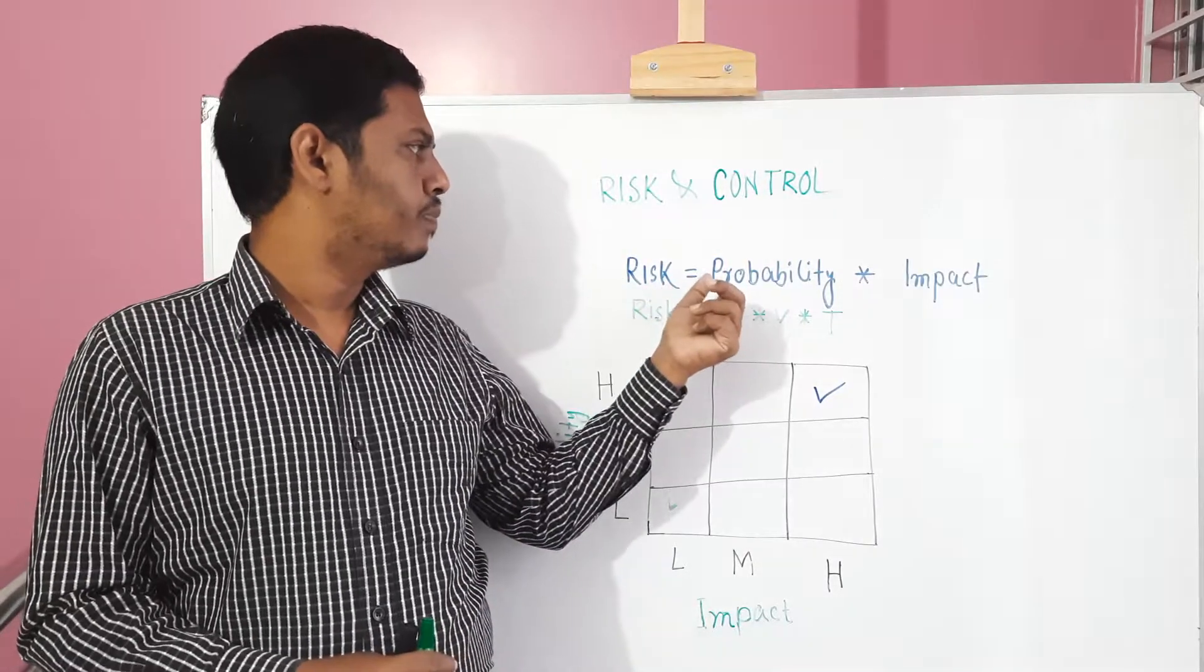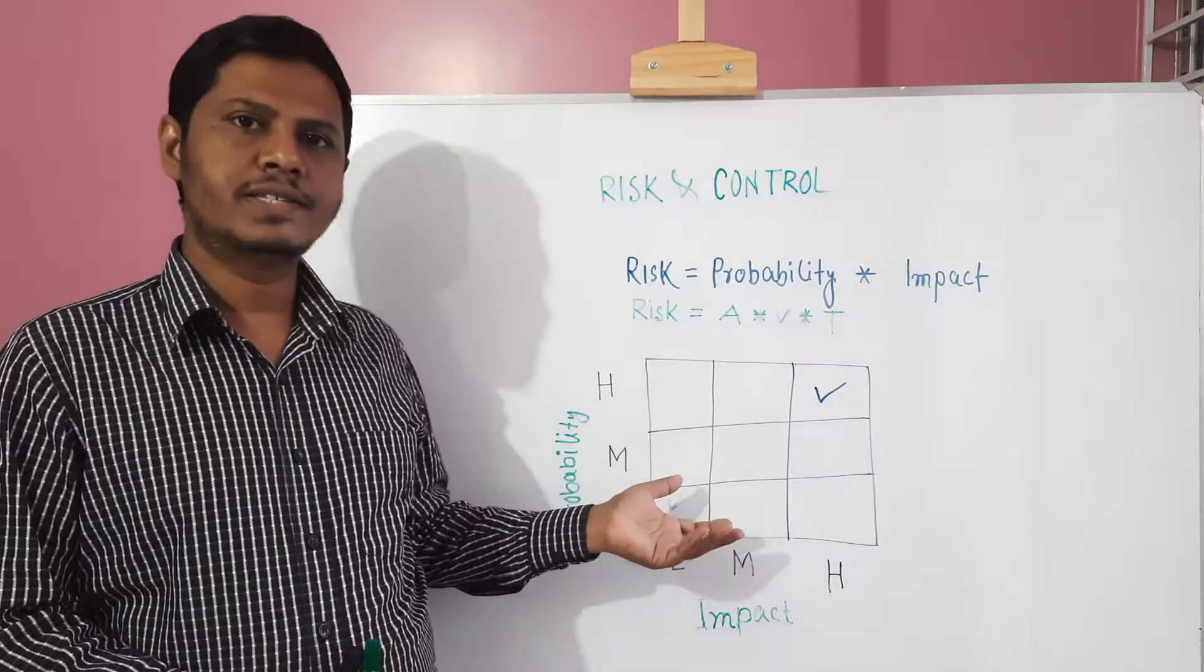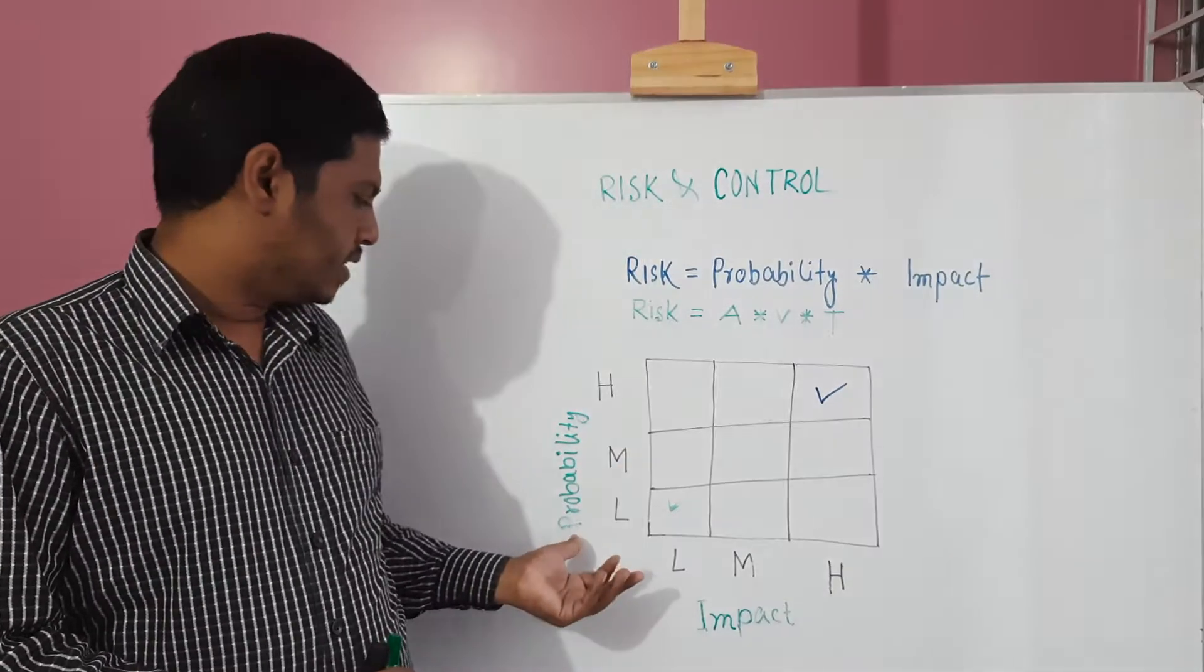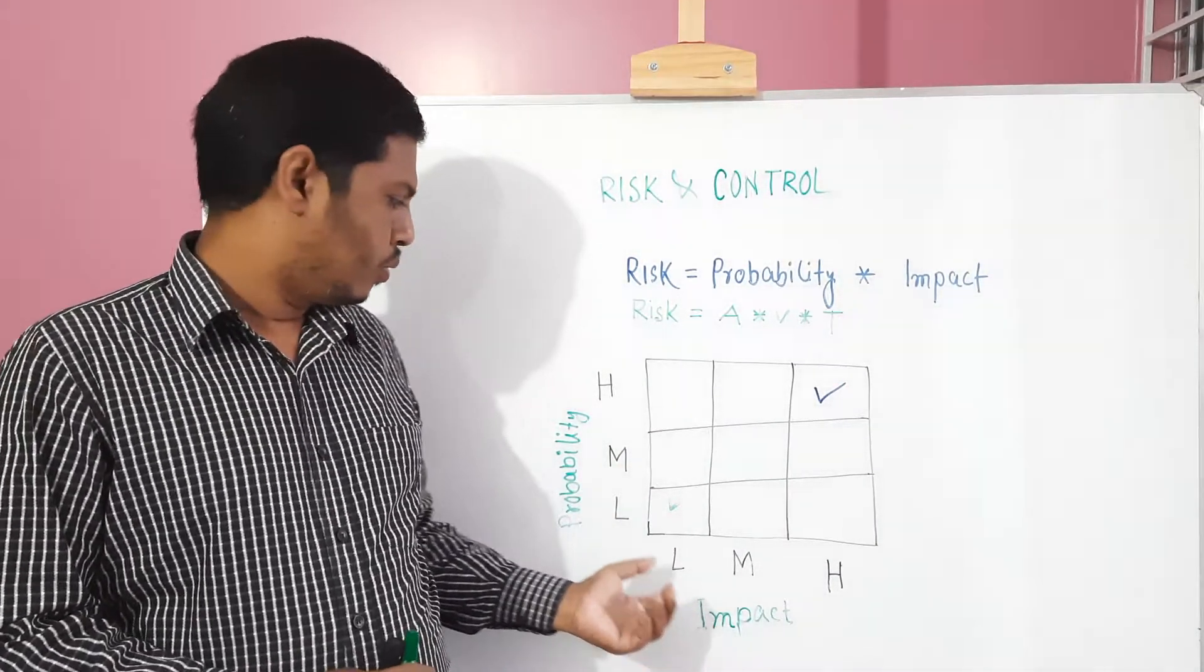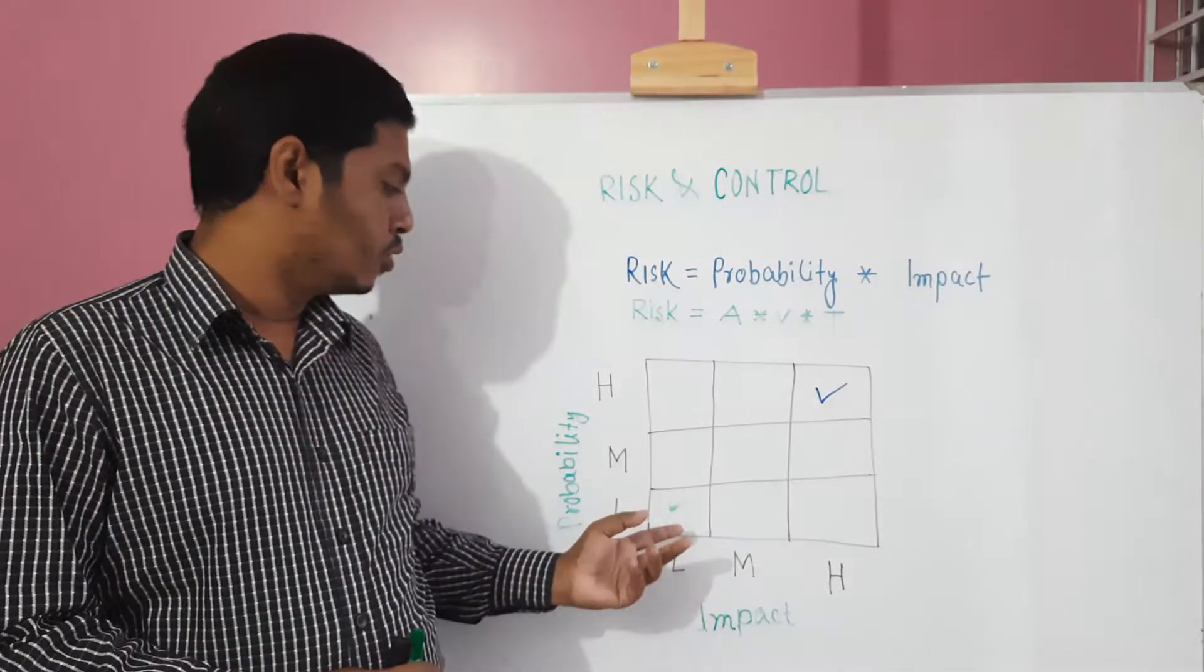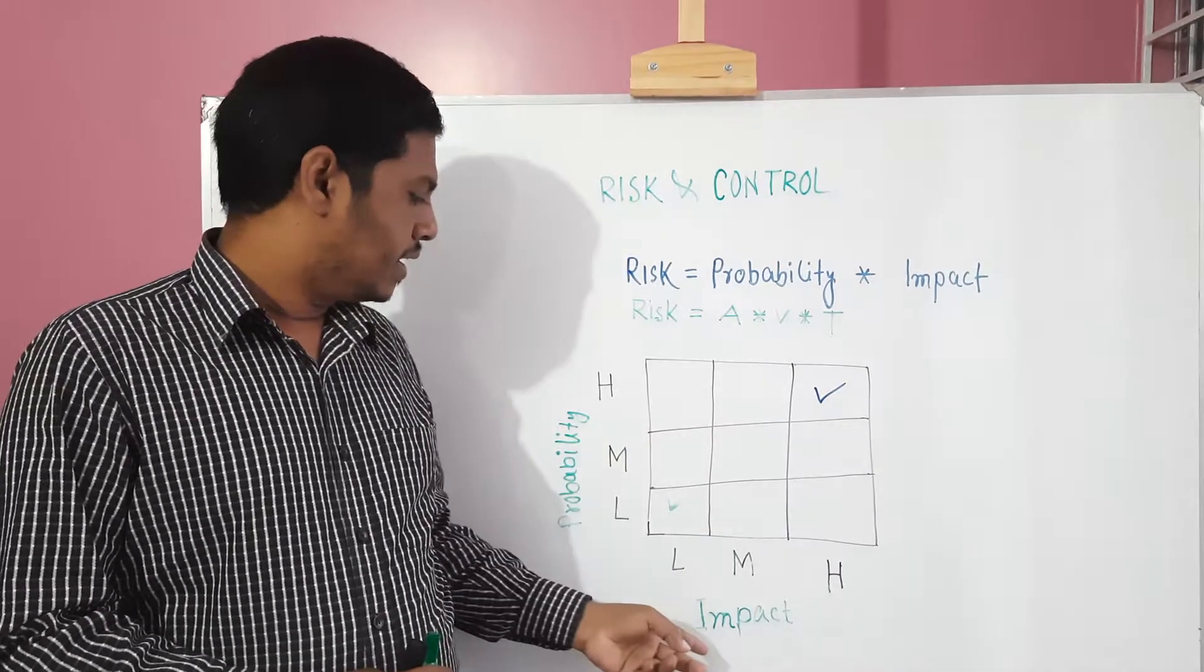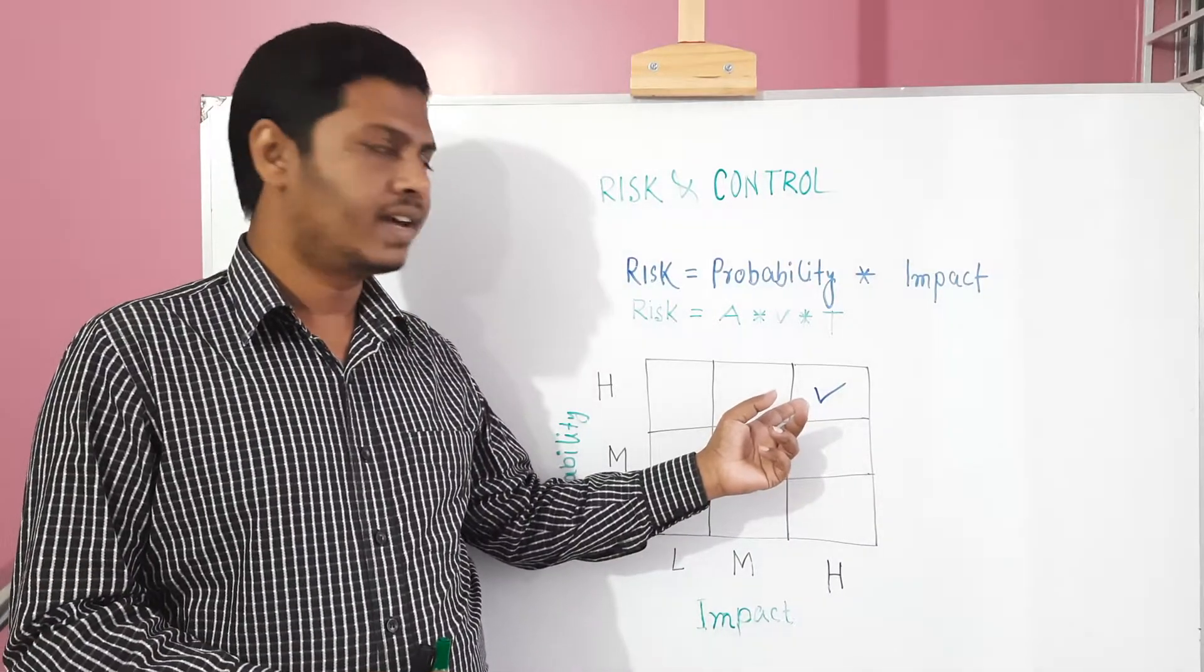Risk is the product of probability and impact. If we see the risk matrix, here are two dimensions: probability and impact. When the probability is low and the impact is low, ultimately the output of risk is low. When the probability is high and impact is high, ultimately the output of risk is high.